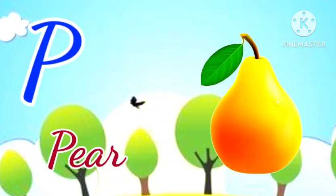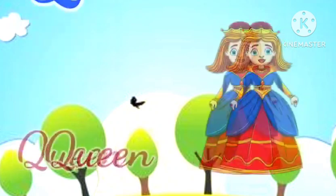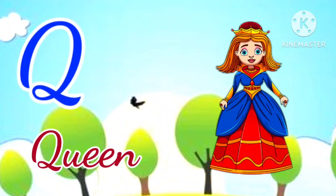P for Pear. Pear means Naspati. Q for Queen. Queen means Rani.